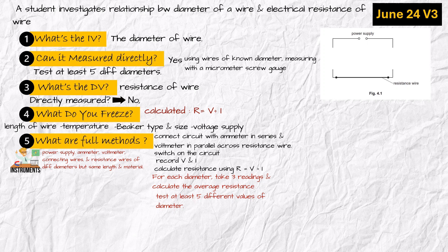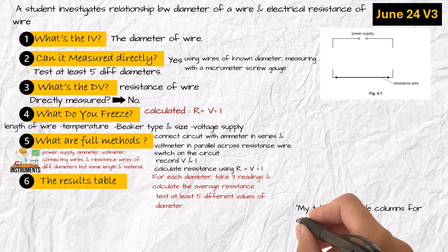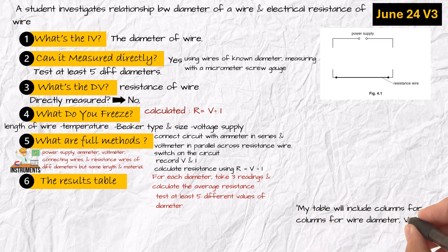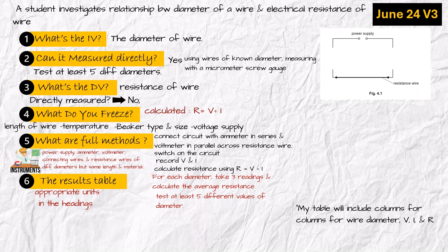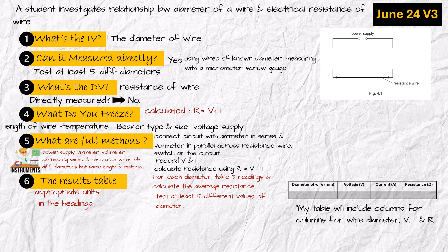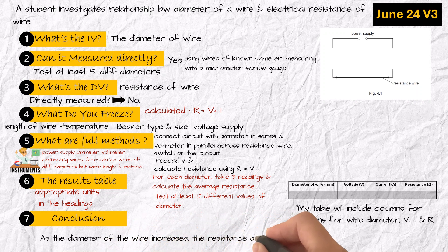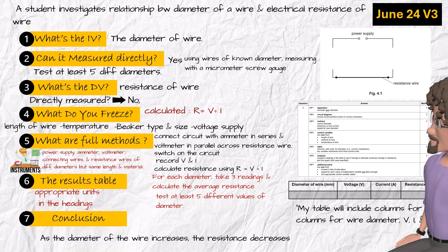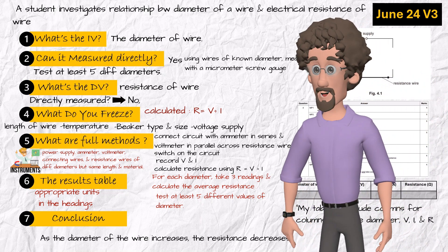Number six: the results table. My table will include columns for wire diameter, voltage, current, and resistance, with appropriate units in the headings. This is what your results table will look like. Number seven: conclusion — as the diameter of the wire increases, the resistance decreases. Now fold all of that into one sharp paragraph, pause the video, scan the mark scheme, and smile. You just nailed it.